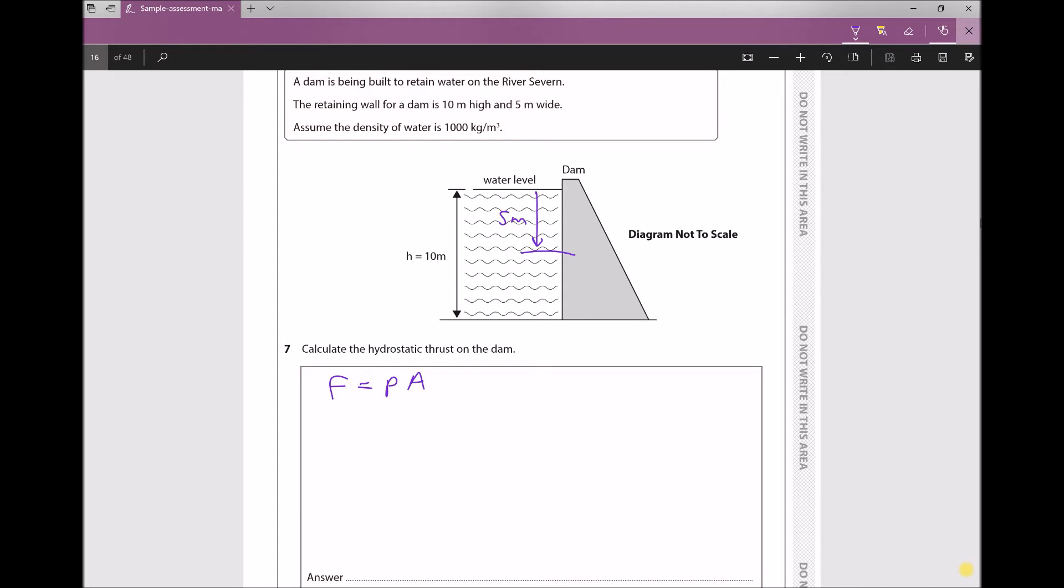The question specifies that the height of the dam is 10 meters, and it also tells us that it's 5 meters wide, or 5 meters into the page. So we would have a dam that's 10 meters high but going back into the page 5 meters. We can use that to determine the area that's in contact with the fluid.